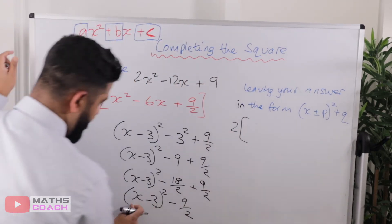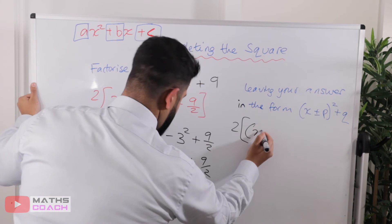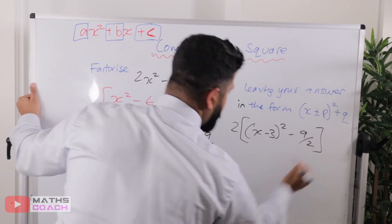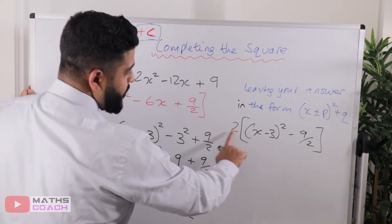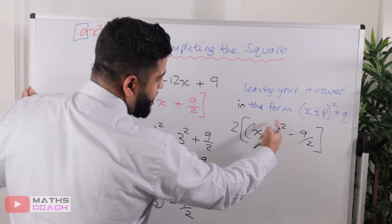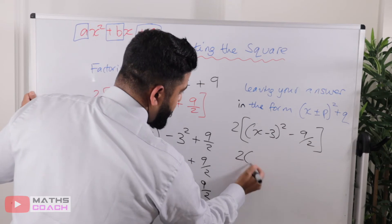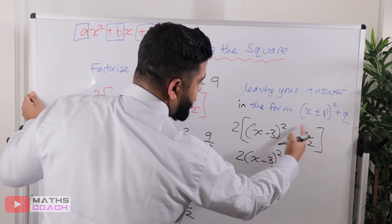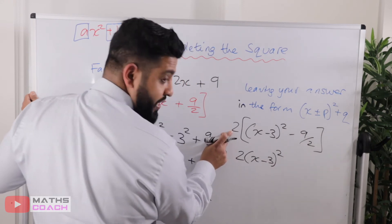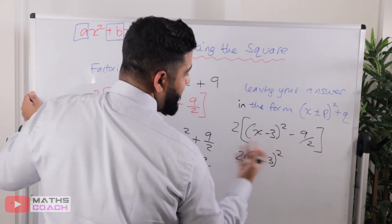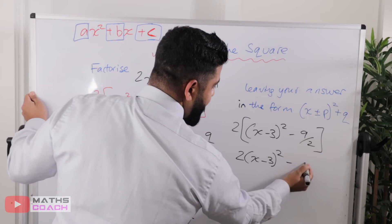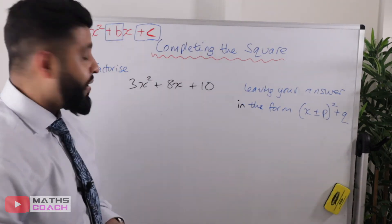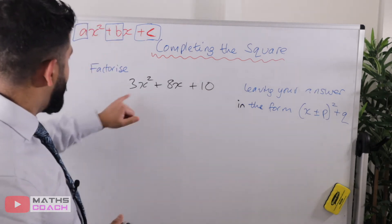That 2 I will now introduce back into my working out. So I have 2 times the bracket containing x minus 3 squared minus 9 over 2. I multiply the 2 with the first term giving 2 times (x minus 3) squared, and then 2 times 9 over 2 — conveniently the 2s cancel — leaving minus 9. That is my final answer.